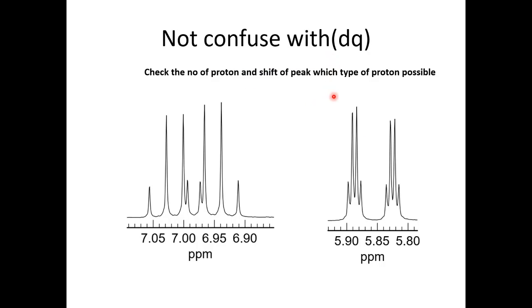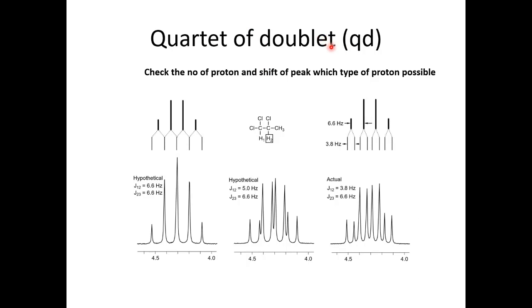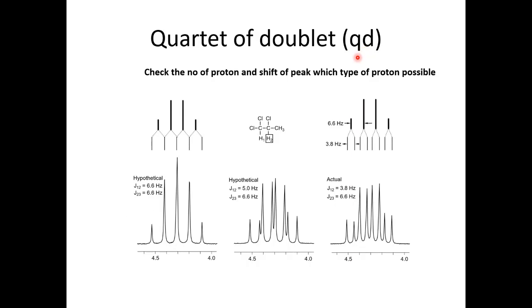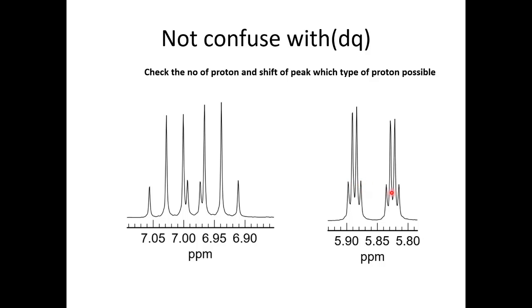So not confused with the doublet of quartet. We are talking about the quartet of doublet. Sometimes people confuse with the doublet of quartet DQ and QD. So you will notice in center you have equal intensity and at the edge also equal intensity. But in this case you have like a separation and you see a 2 signal then a drop 1 signal here. Then a 2 small signal then you have rise. If you are not sure about the DQ, just click on the link. You will find another video explaining the example of the DQ.